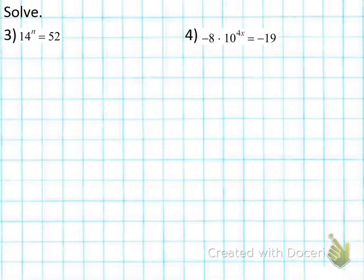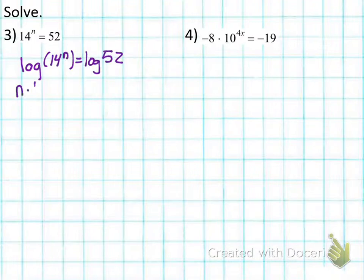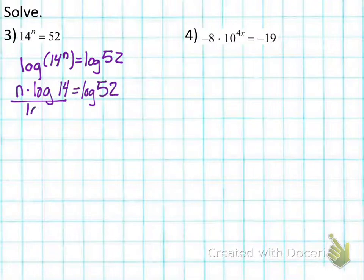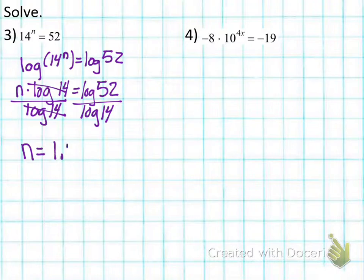Number 3 is very similar to number 1. The exponential term is already isolated, so I take the log of both sides right away, then pull the exponent in front using the power property. To solve for n, I divide by log of 14 and do that on my calculator, ending up with n equals 1.4972.